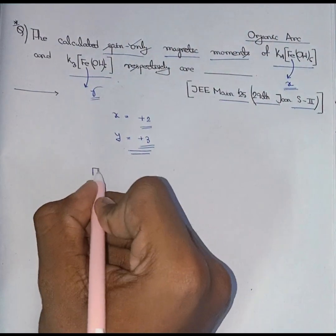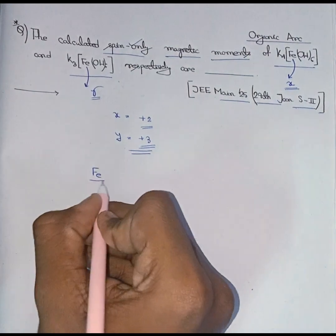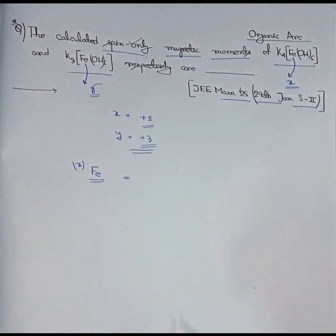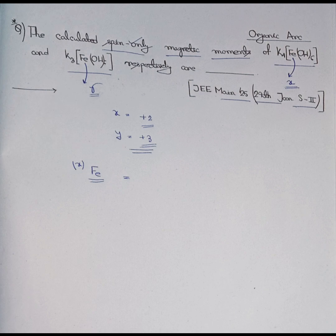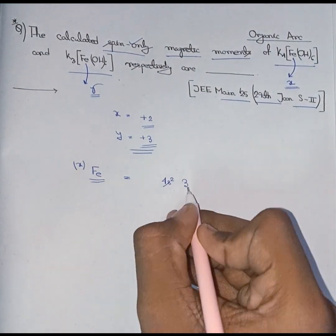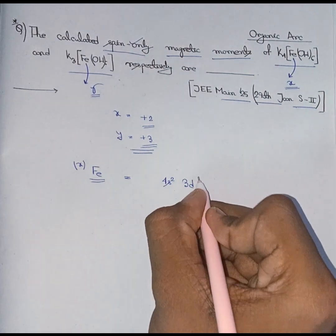So here for the Fe, which we have taken as x in terms of valency, the last orbitals electronic configurations are 4s² 3d⁶.